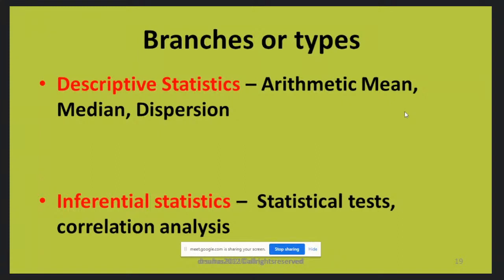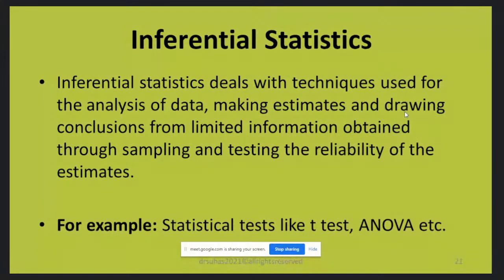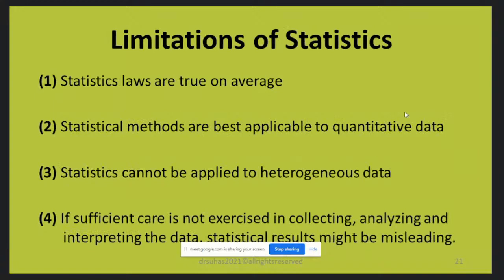Inferential statistics is applied when you want to draw conclusions — for example, whether Navagagugulu is beneficial in reducing signs and symptoms of Amavata, or whether a drug is beneficial in reducing weight in obesity patients. It encompasses various types of statistical tests and correlation analyses. Descriptive statistics represents data in tables, graphs, averages, or variability — examples include mean and standard deviation — whereas inferential statistics draws conclusions using tests like t-test and ANOVA.